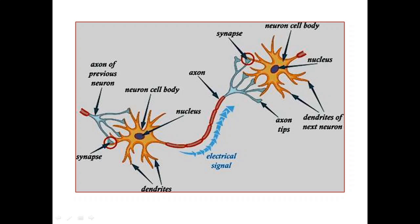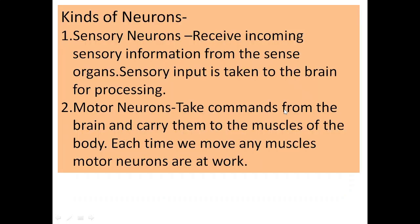You can understand the whole process more clearly by this diagram. This is the neuron cell body, this is the nucleus, these are the synapses, this is the axon. These are the two neurons. This is the electrical signal traveling in a particular direction, and these are the dendrites of the next neuron.